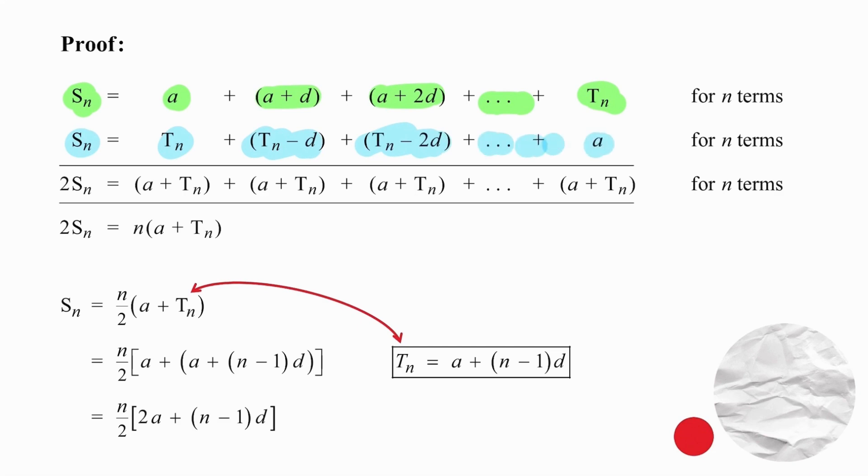Step three, add the columns. So if we add the left, we get twice the sum. If we add the first column, we get the first term plus T_N. If we add the second column, we get the first term plus T_N. If we add the third column, notice that when you're adding the differences are cancelling each other out each time. So each and every column adds up to the exact same value.